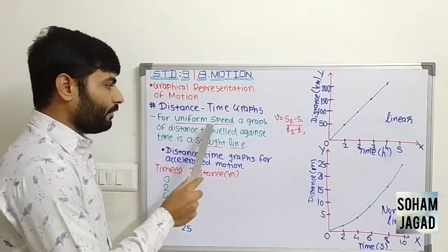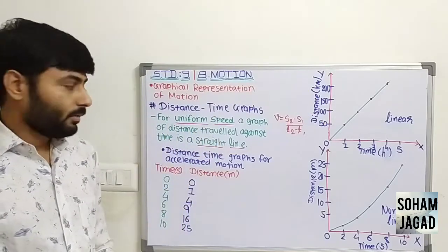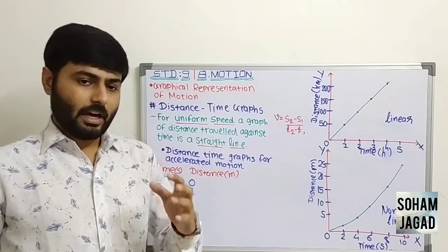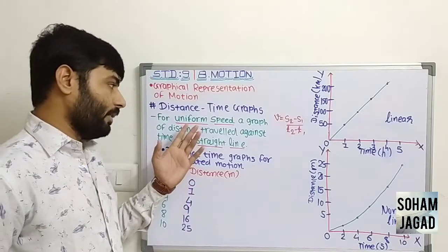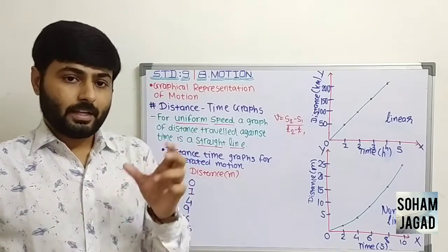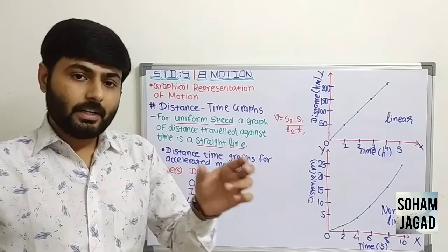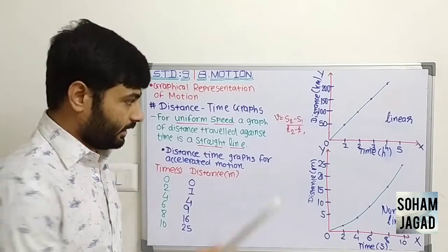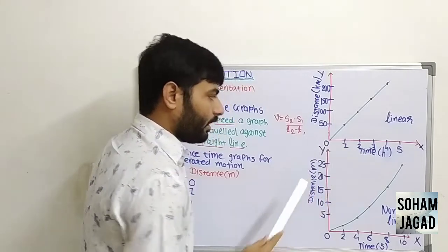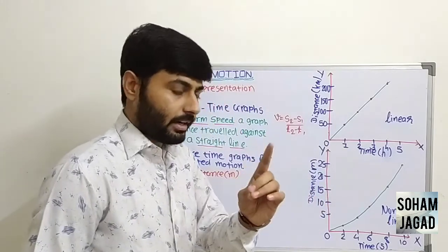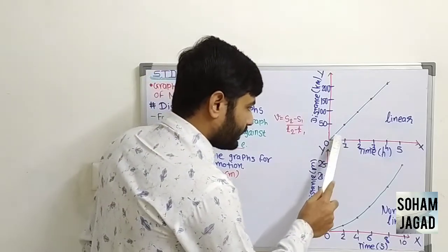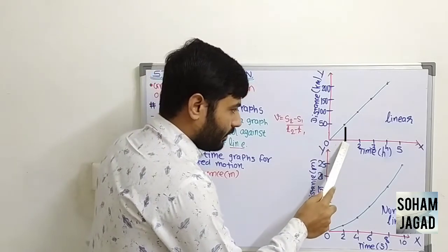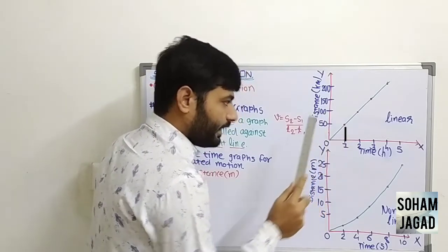For uniform speed, a graph of distance traveled against time is a straight line. Uniform speed means in equal time intervals, the distance covered by the object will be equal. In this example, from 0 to 1 hour, the object covers a distance of 50 km.